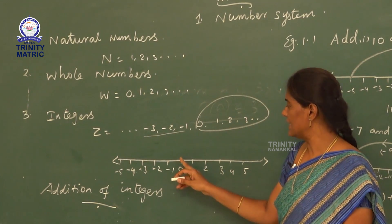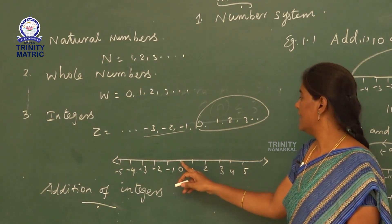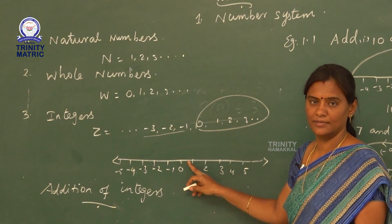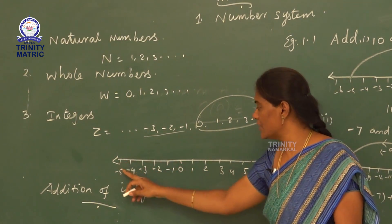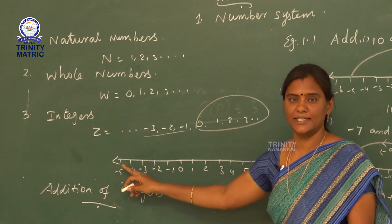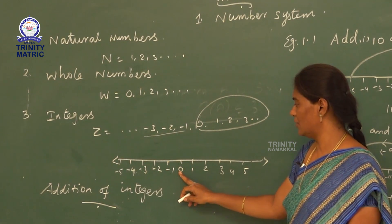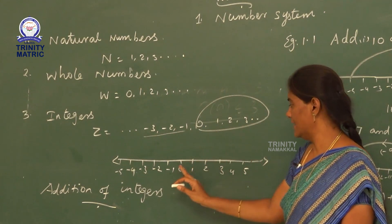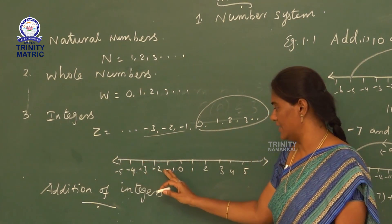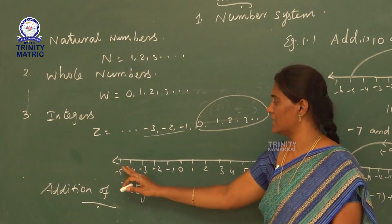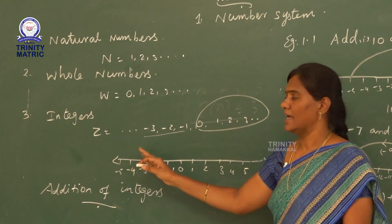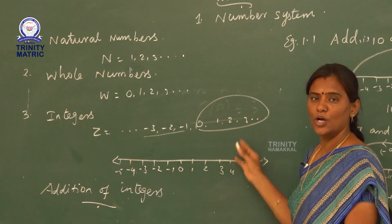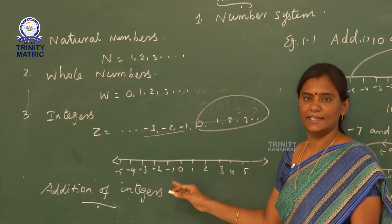See here, it is easy to understand using the number line. This is 0. The right side of 0 is positive integer and the left side of 0 is negative integer. The right side of 0 is 1, 2, 3, 4, 5, etc., and the left side of 0 is minus 1, minus 2, minus 3, minus 4, minus 5, etc.